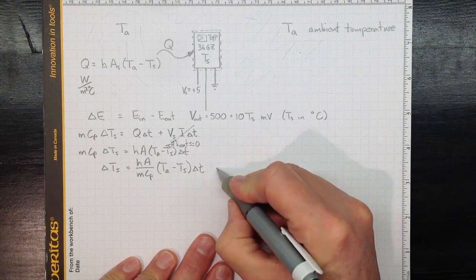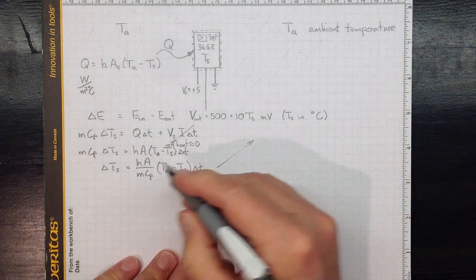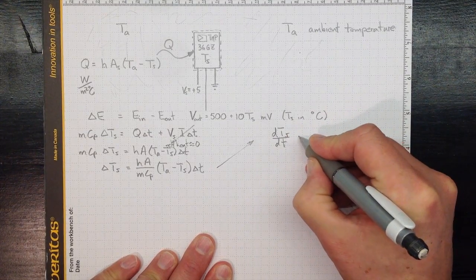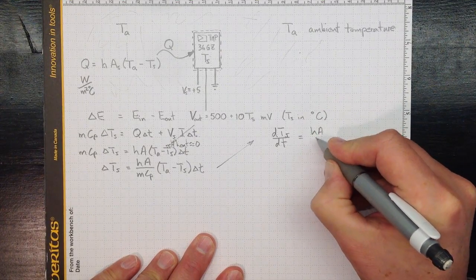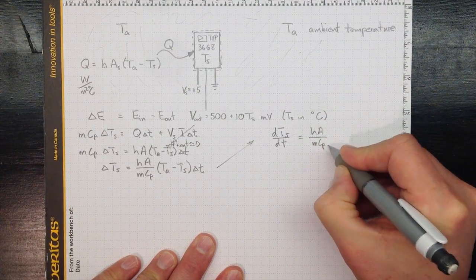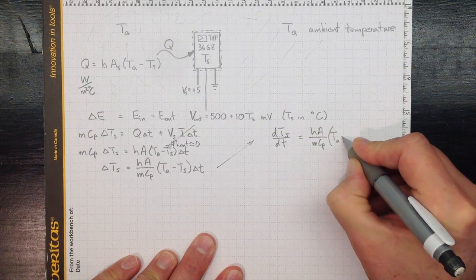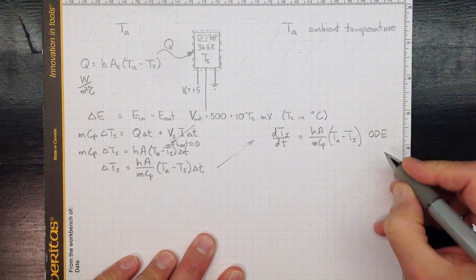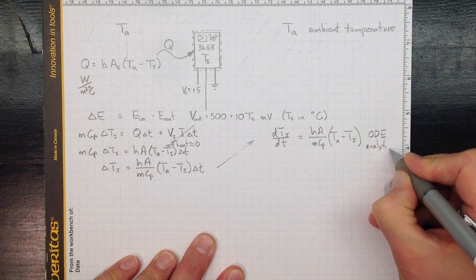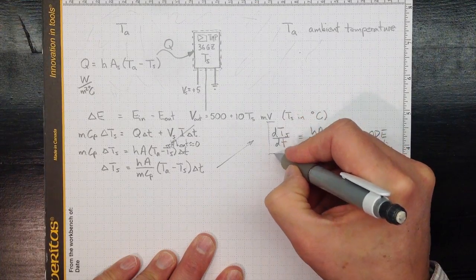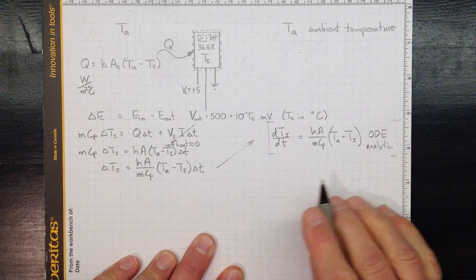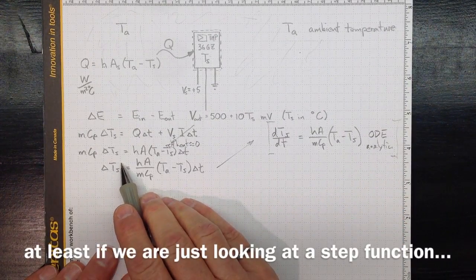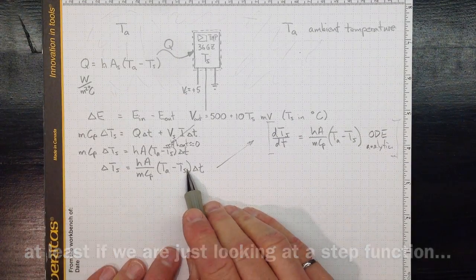And if we go off and do a little calculus dividing through, that will get us something like DTS DT equal to HA over MCP TA minus TS. And that differential equation, that's an ordinary differential equation, and you could do an analytic solution of that if you went off to the ODEs course. But we'll leave that aside for the moment. We're going to get a numerical solution that we can get for a variety of situations. So delta TS equal to HA over MCP times the temperature difference.